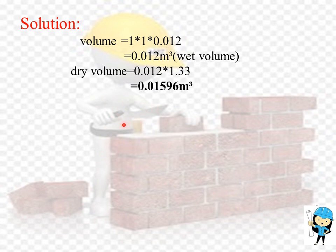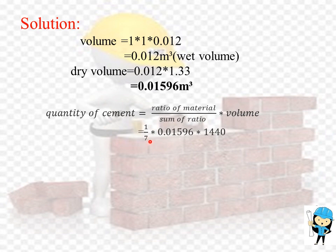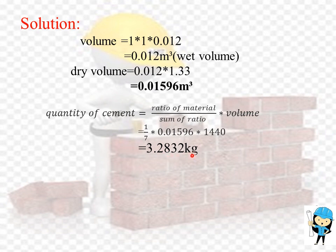The second step is we need to find the quantity of cement and sand. The formula used is ratio of the material divided by sum of the ratio, into volume. The ratio taken for the wall is 1 is to 6. By adding 1 and 6 we get the sum of the ratio as 7. The dry volume is 0.01596 meter cube. The density of cement is 1440 kilogram per meter cube. By multiplying these three factors we get the quantity of cement, that is 3.2832 kilogram. We already know 1 bag of cement is equal to 50 kilogram.